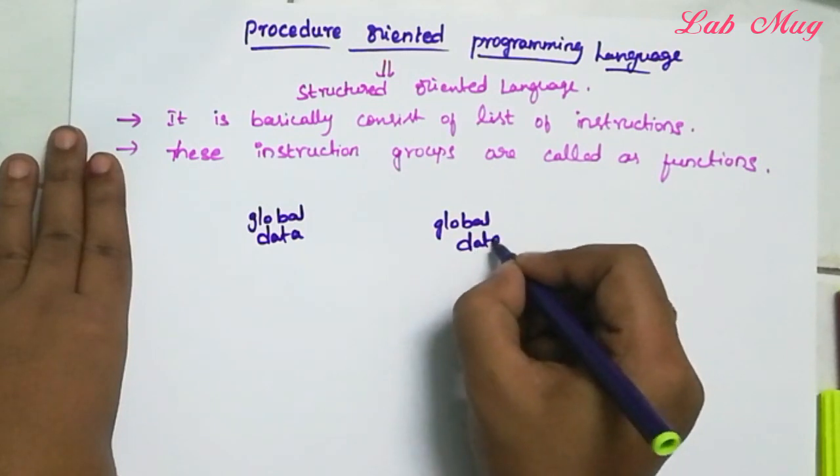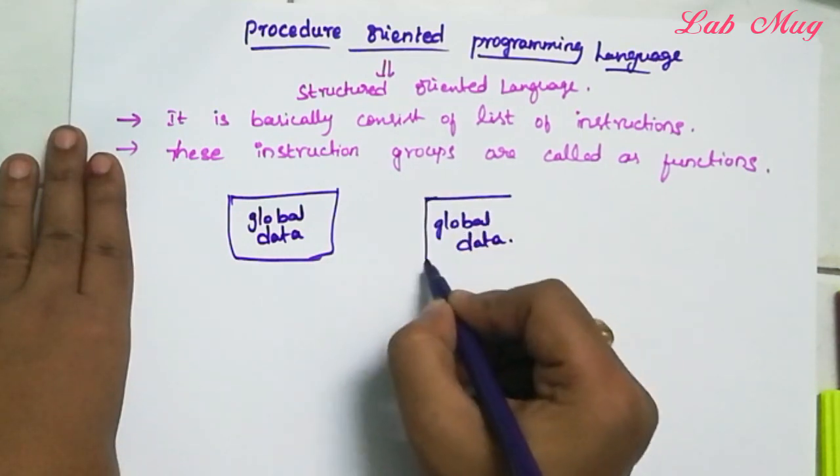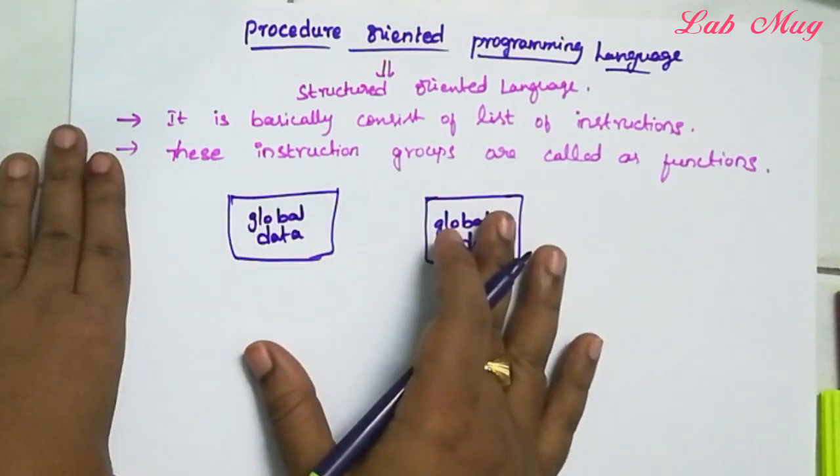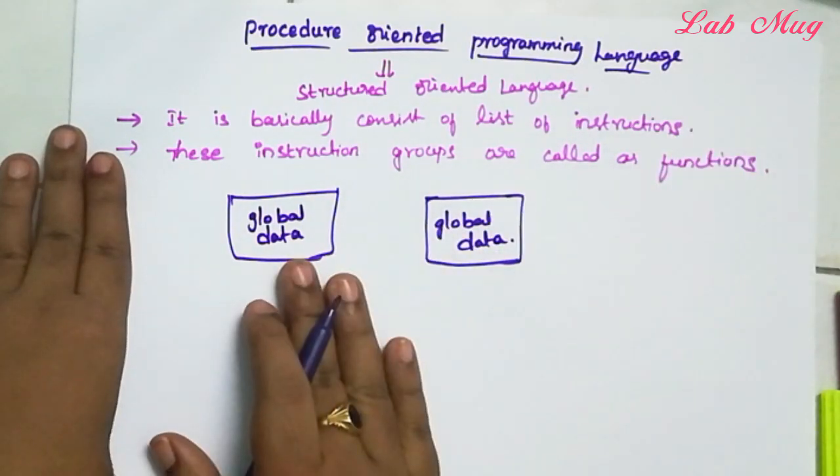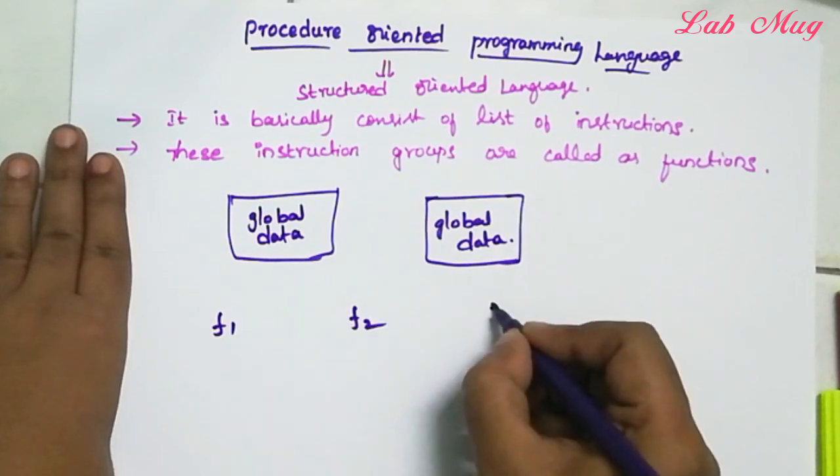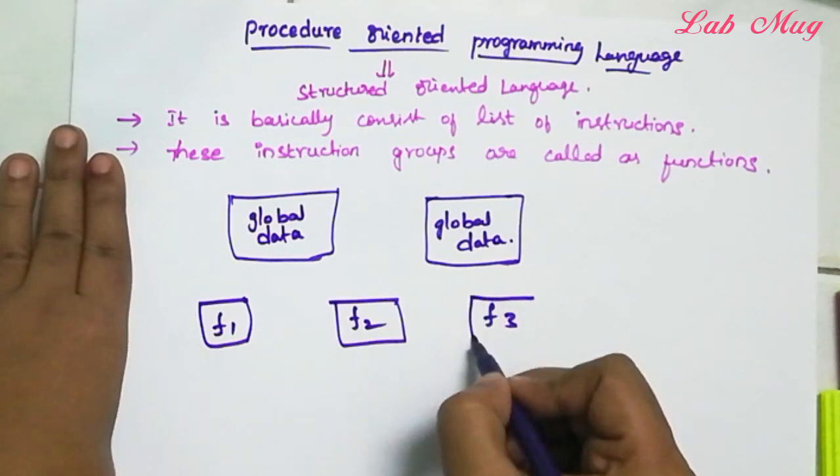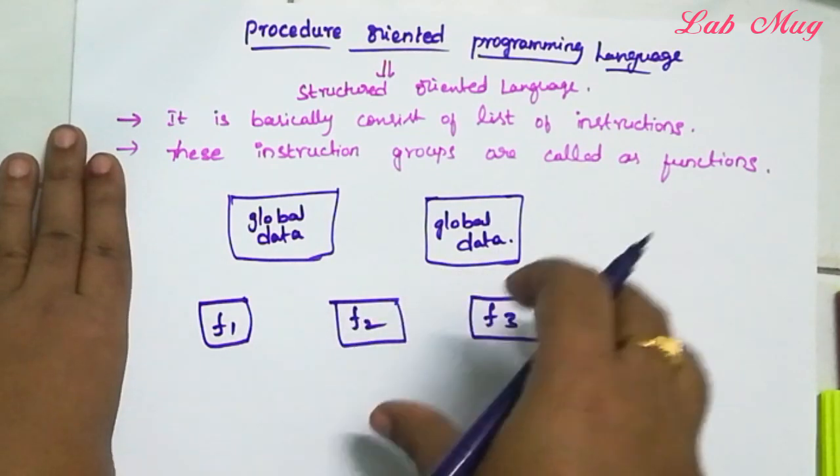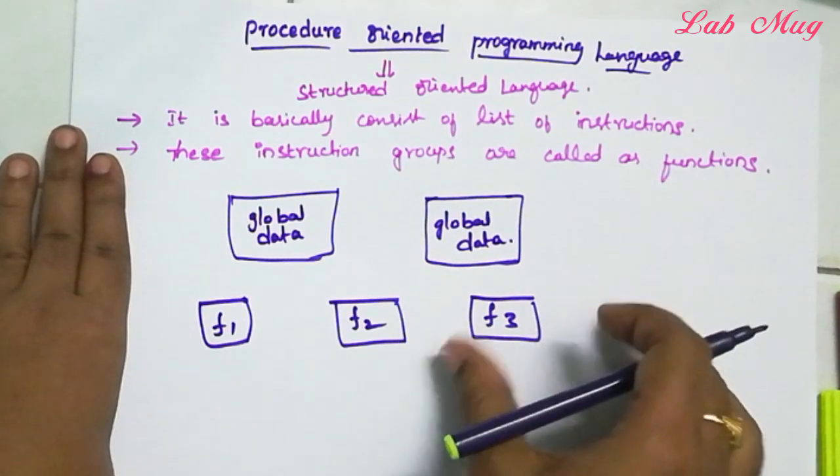So global data, that is variables. In procedure oriented language, these variables are accessed by instructions in the form of functions. Maybe number of functions - Function 1, Function 2, Function 3. So this is Function 1, Function 2, and Function 3. These are variables and methods. In Java we call them methods, but we'll call them functions.